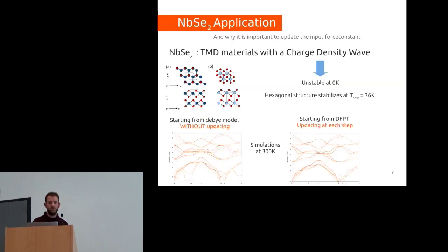I wanted to show you an example of the importance of updating the force constants. I did a test case on niobium selenide 2 (NbSe₂), which is a TMD material with a charge density wave. What this means is that at 0K it's unstable in DFT calculations, and when you heat it up, it becomes stable with respect to the hexagonal symmetry. The transition temperature should be 36K.